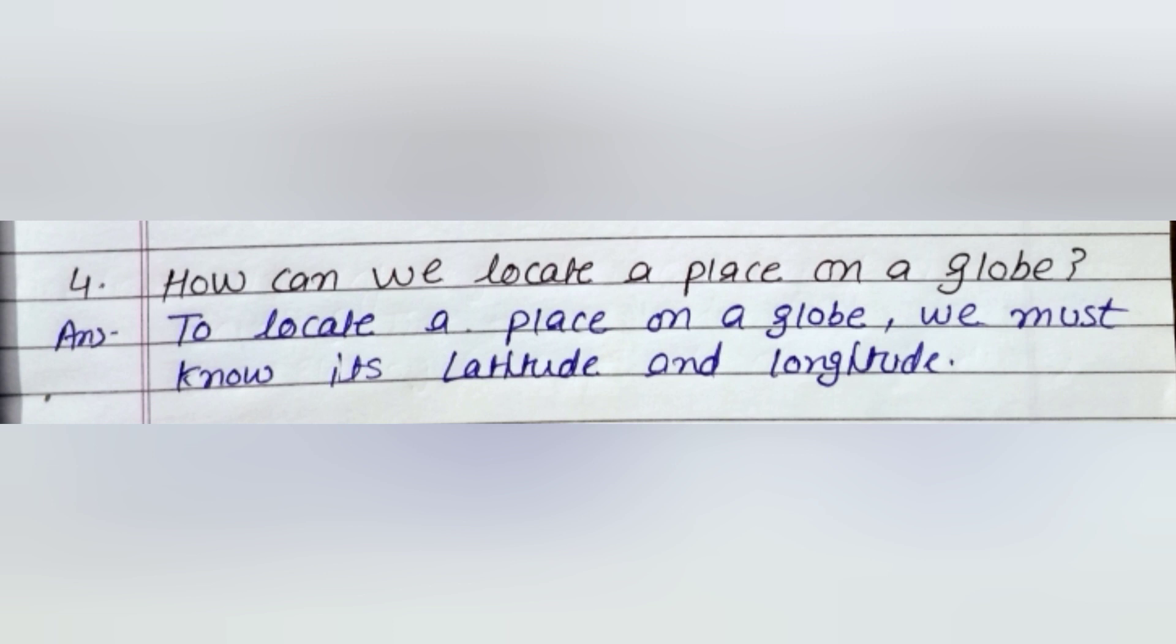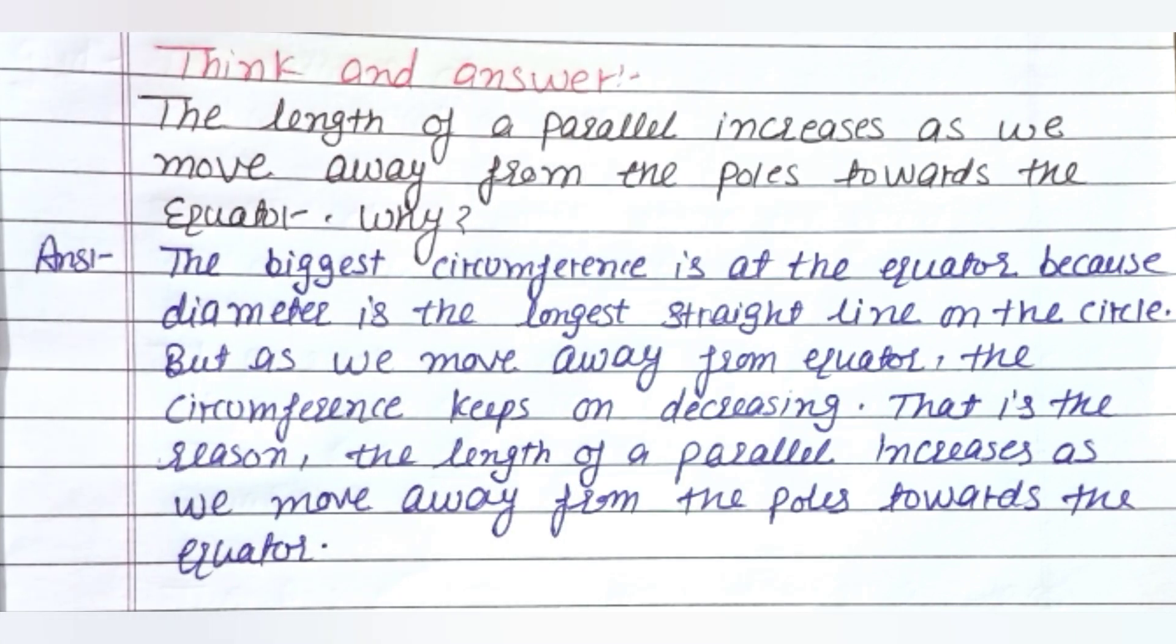Now think and answer question is: The length of a parallel increases as we move away from the poles towards the equator. Why? Answer of this question is: The biggest circumference is at the equator because diameter is the longest straight line on the circle. But as we move away from equator, the circumference keeps on decreasing. That is the reason the length of a parallel increases as we move away from the poles towards the equator.